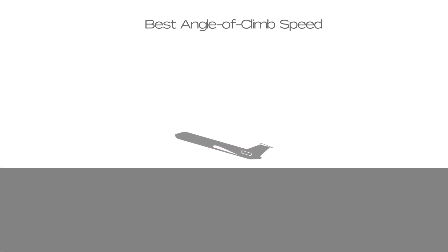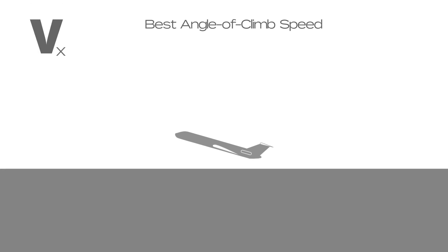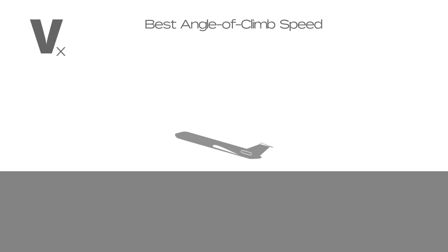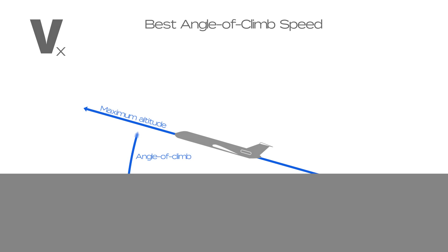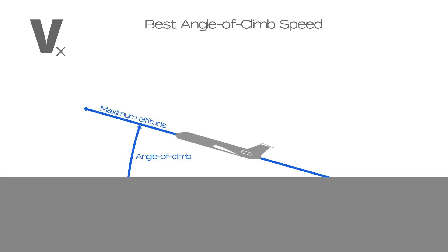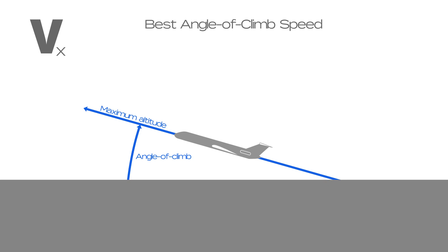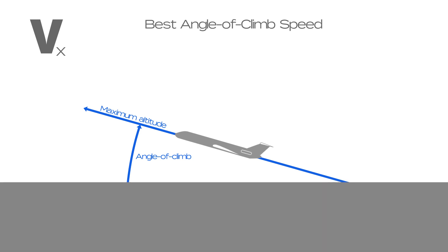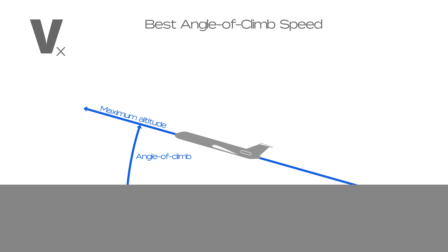Best angle of climb speed is represented by VX. This speed delivers the greatest gain of altitude in the shortest possible horizontal distance. VX increases with altitude and usually decreases with a reduction of weight.